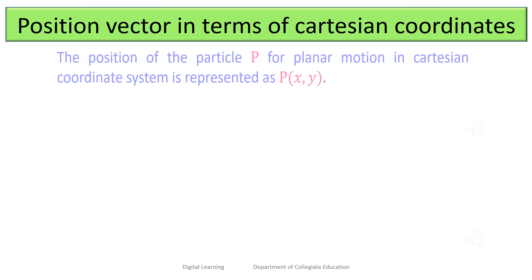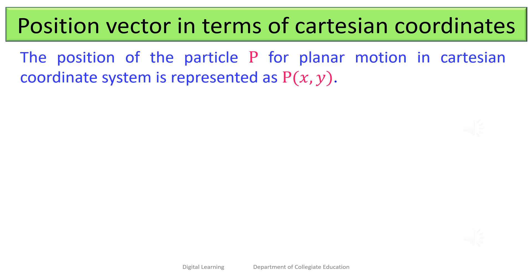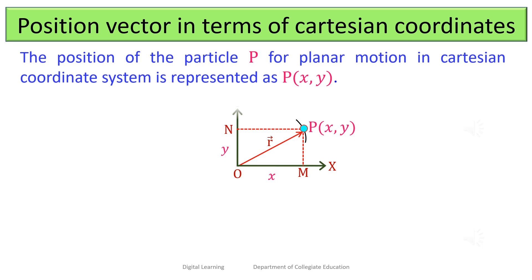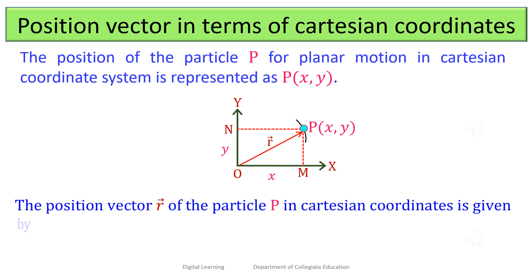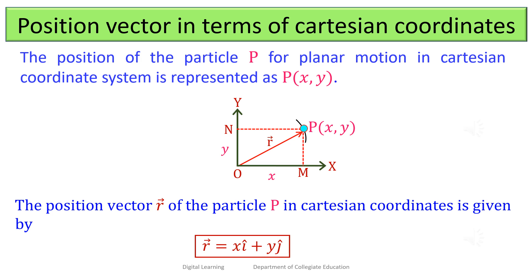The position of the particle P for planar motion in the Cartesian coordinate system is represented as P(x, y). The position vector r of the particle P in Cartesian coordinates is given by vector r = x î + y ĵ, where î is a unit vector along the x-direction and ĵ is a unit vector along the y-direction.